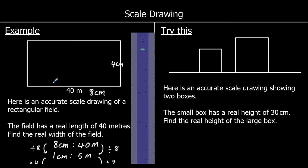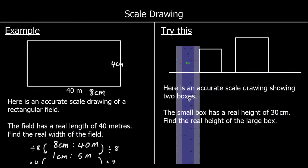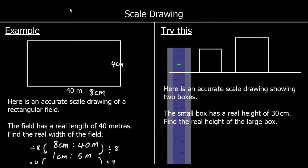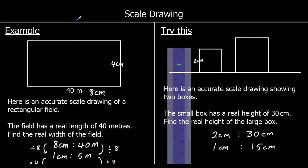And one for you to try. We have two boxes. A small box has a real height of 30 cm, and we need to find the real height of the large box. Measuring the heights, the small box has a height of 2 cm on the drawing. So 2 cm on the drawing is 30 cm in real life. If we halve both, we find that 1 cm on the drawing is 15 cm in real life.